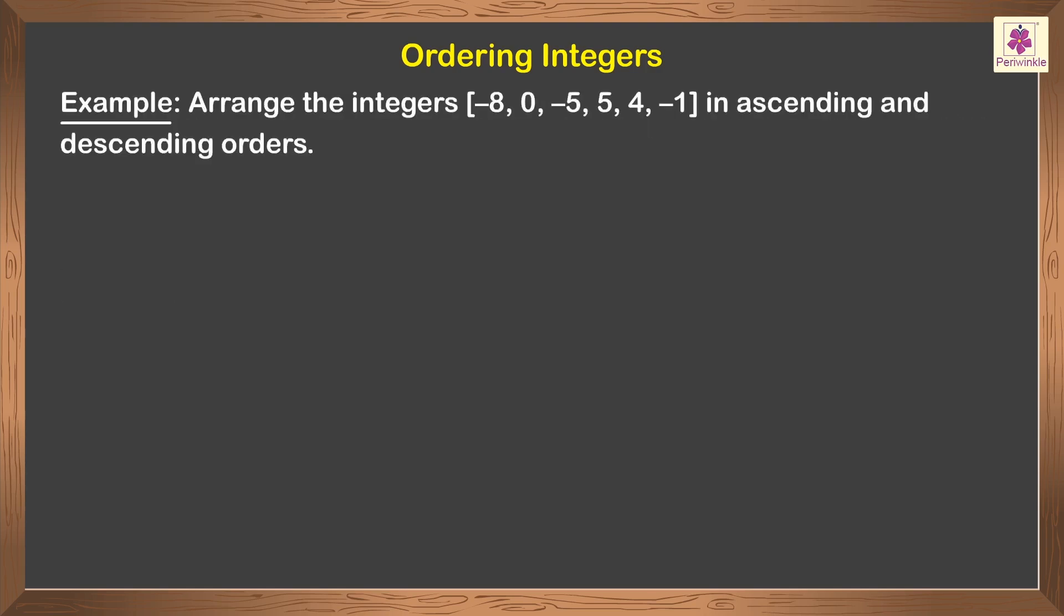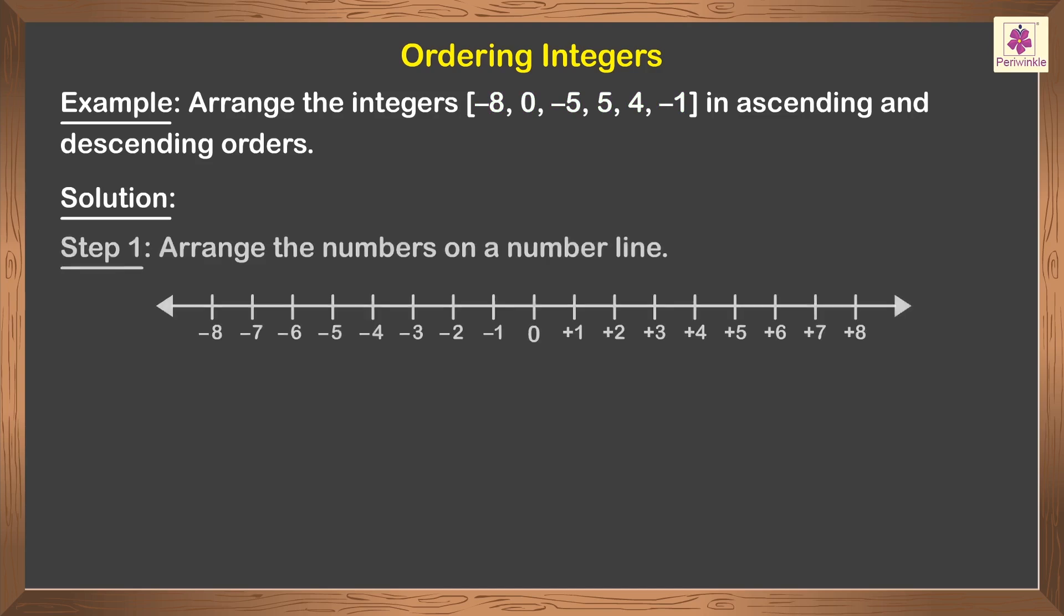Now arrange the integers negative 8, 0, negative 5, 5, 4, negative 4, negative 1 in ascending and descending orders. Here we shall follow a few steps. Step 1: Arrange the numbers on a number line as shown.